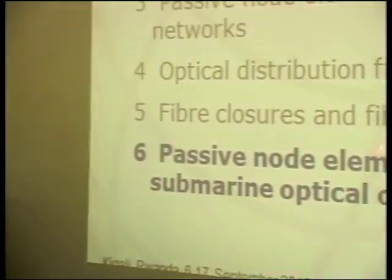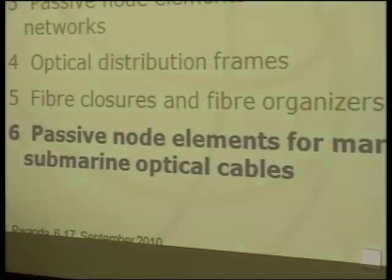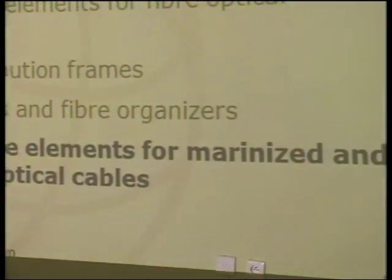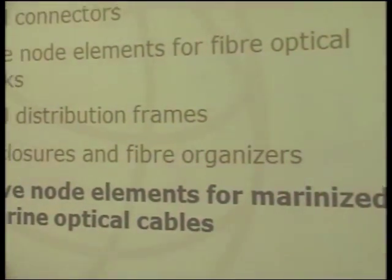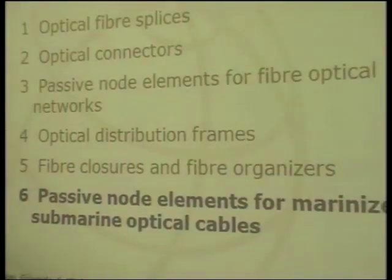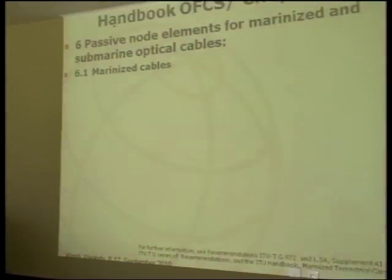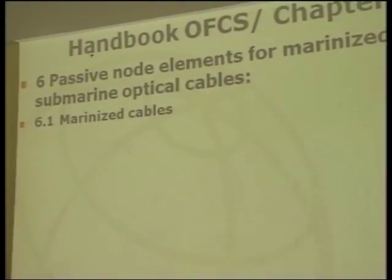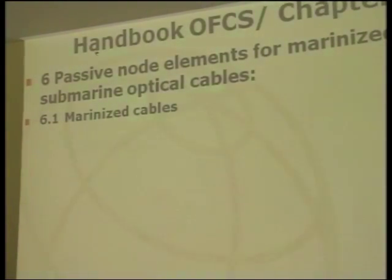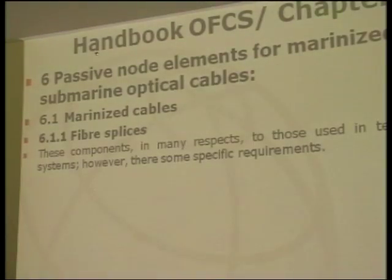The last point of this chapter covers closures used with passive node elements for marinized and submarine cables. This system has some specific characteristics, and some general characteristics already discussed also apply. The first block of information refers to marinized cable — section 6.1 — and after that, section 6.2 relates to submarine cables. Regarding fiber splices in marinized cable, these components are in many aspects the same as those used in terrestrial cable systems, but there are some specific requirements.